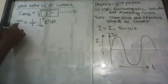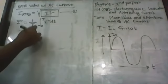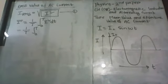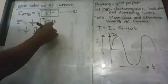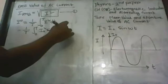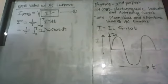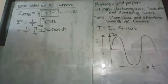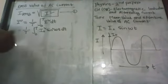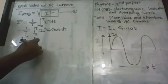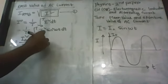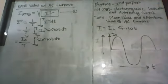Since I₀ is a constant function, it comes out from the limit of integration, giving I₀²/T × integral from 0 to T of sin²(ωt) dt. To solve the sin² function using integration is a very tough task — we cannot directly handle a square function of sine or cosine. That's why we need to convert it using a trigonometric formula.